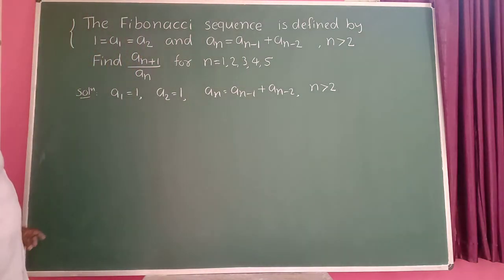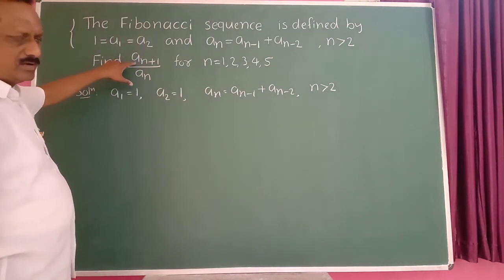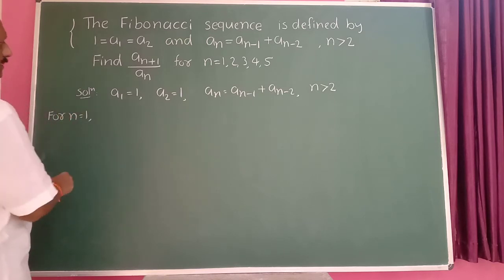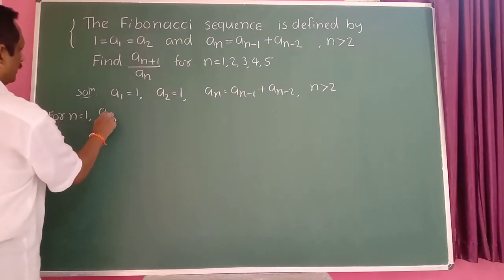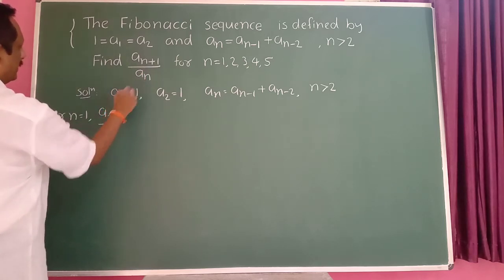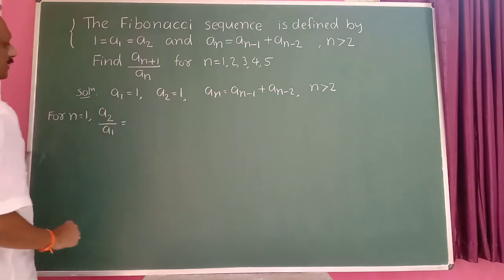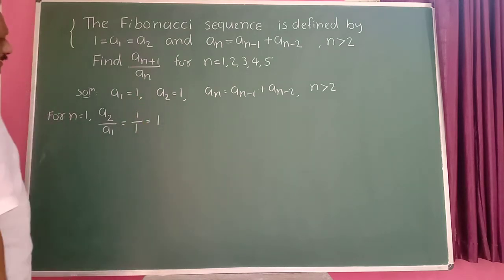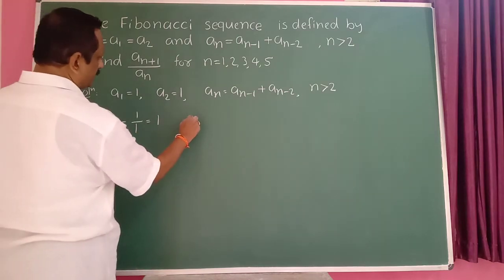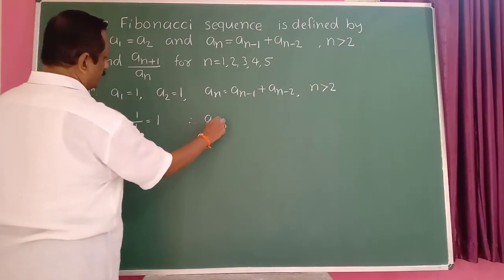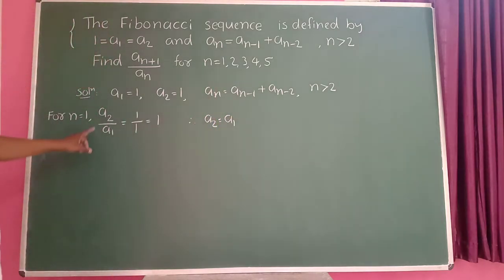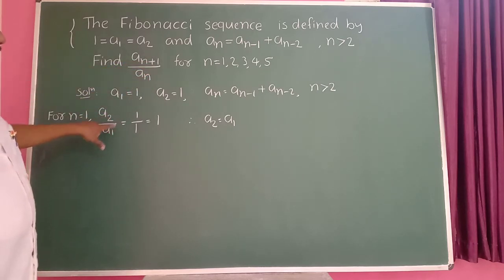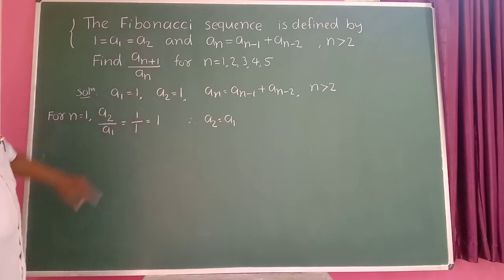For the solution, a_1 is equal to 1 and a_2 is also 1. For n equal to 1, a_(1+1) upon a_1 is a_2 divided by a_1. Since a_2 is 1 and a_1 is 1, this is 1 upon 1 which equals 1.